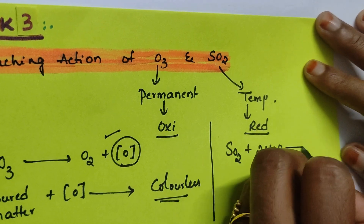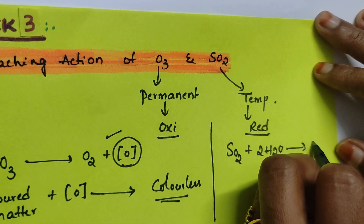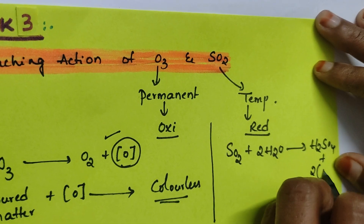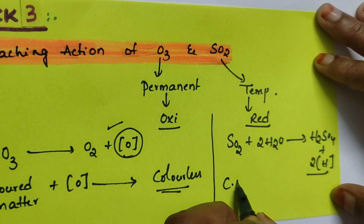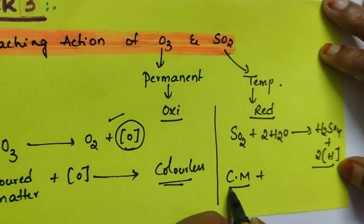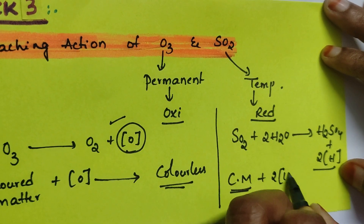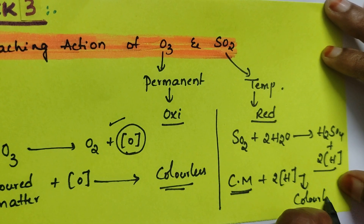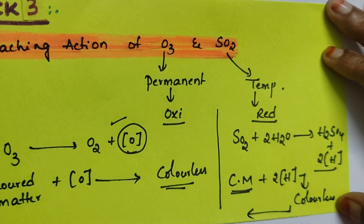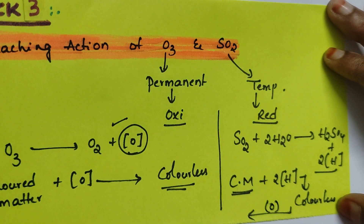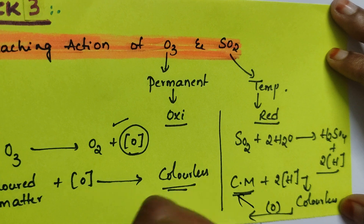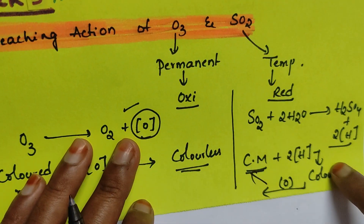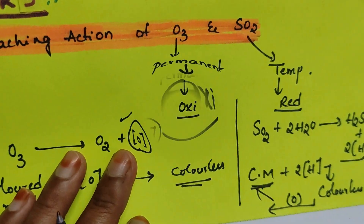Coming to SO2: when SO2 reacts with water, it gives nascent hydrogen along with H2SO4. This nascent hydrogen reduces any colored matter to make it colorless. But why is it temporary? Because the colorless matter absorbs oxygen from the atmosphere and can convert back into colored matter again. That's why it is temporary.